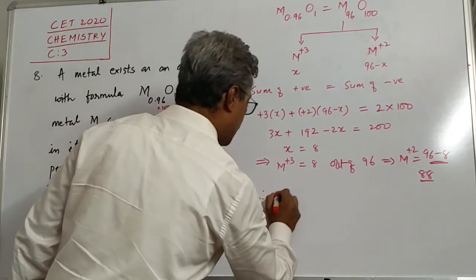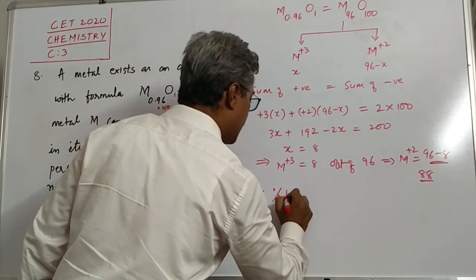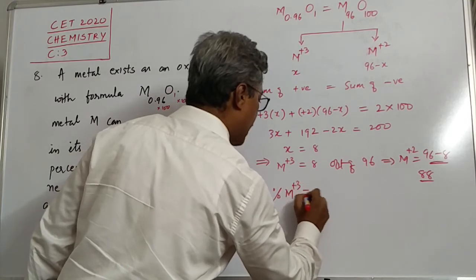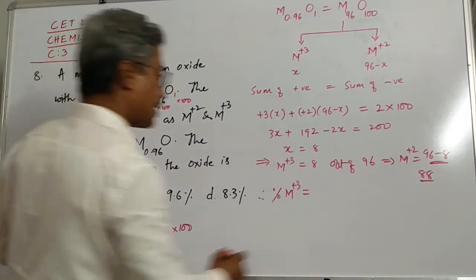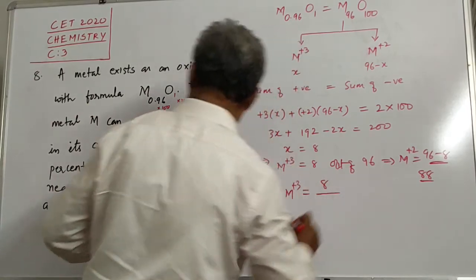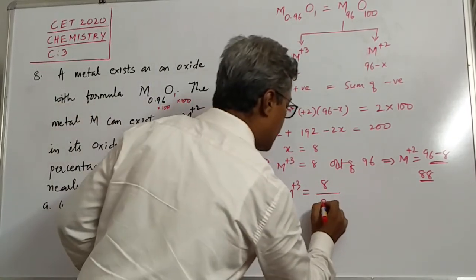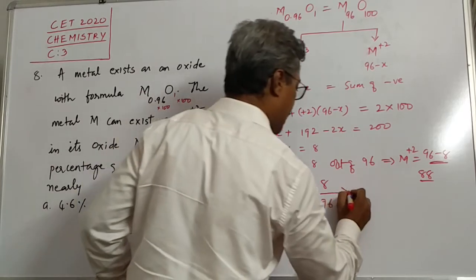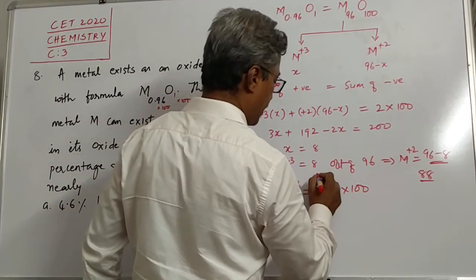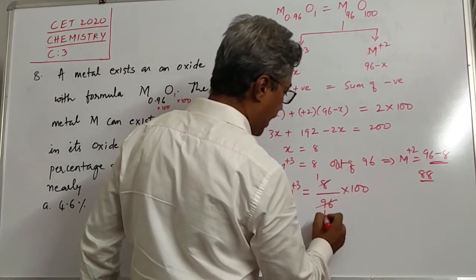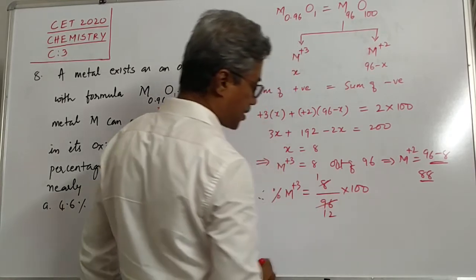Okay, therefore, percentage of M plus 3 will be equal to, what we have decided? How many M plus 3 are there? How many are there? 8. This is how many? Total 96 into 100. Well, this will be, 8 ones are 8, 8 to the 16.